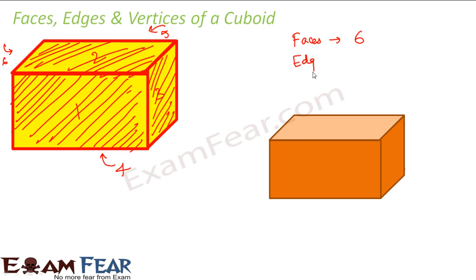Now, what are edges? Edges are nothing but the sharp sides — they are the sides which connect two faces. For example, when you look at face 1 and face 2, they are connected by this side, so this side is an edge. This is one edge which connects these two faces. Similarly, this is an edge which connects faces 1 and 6. And this is an edge which connects faces 1 and 3. So when you look at this cuboid, how many edges do you see?